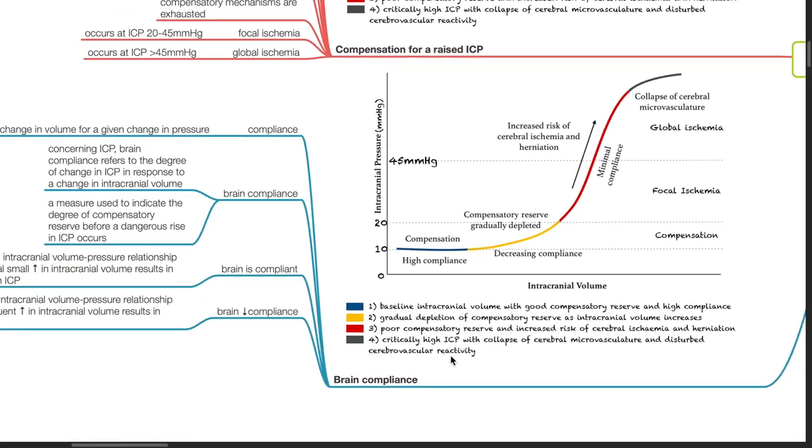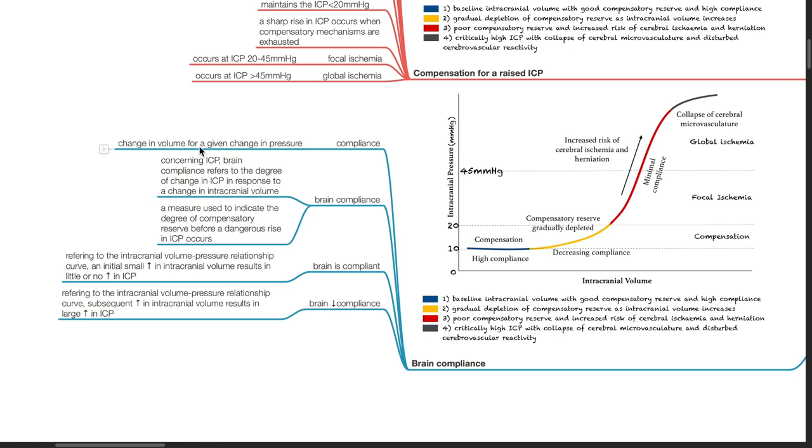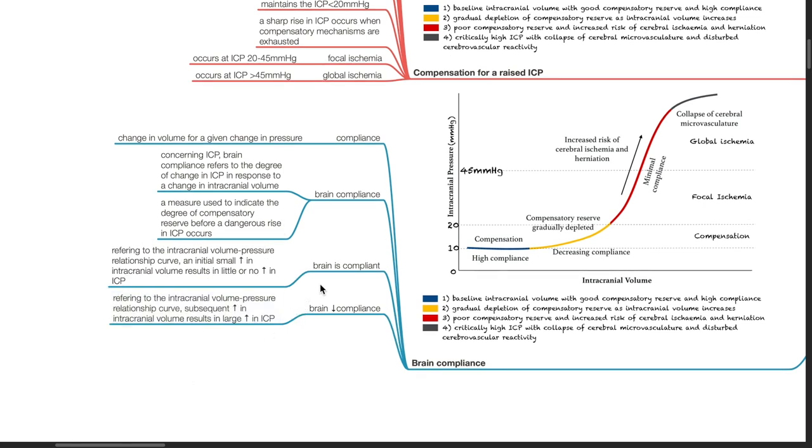Brain compliance. Compliance refers to change in volume for a given change in pressure. Concerning ICP, brain compliance refers to the degree of change in ICP in response to a change in intracranial volume. It is a measure used to indicate the degree of compensatory reserve before a dangerous rise in ICP occurs. When the brain is compliant, referring to the intracranial volume pressure relationship curve, an initial small increase in intracranial volume results in little or no increase in ICP.